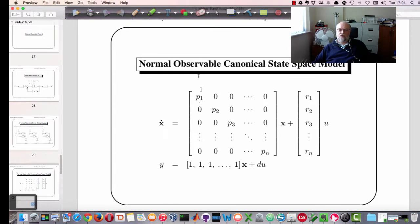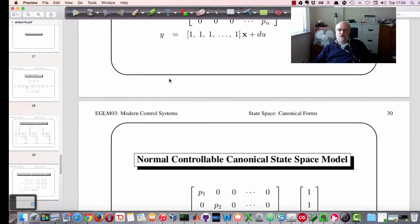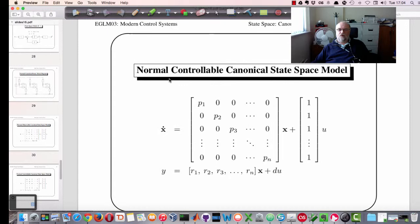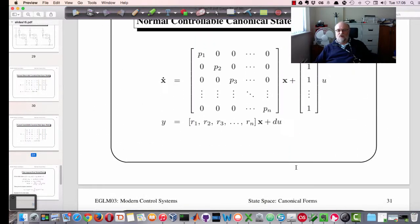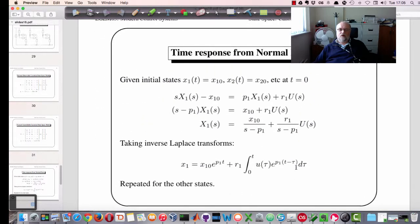In this structure, which this one is called the normal observable canonical state space model, it's very easy to produce the output response. If we want to rearrange things slightly, we can have the controllable canonical state space model where we have ones in the B matrix. And the C matrix ends up having all the residues of the partial fraction expansion in it. Which one you choose again depends on what you want to do with the result.